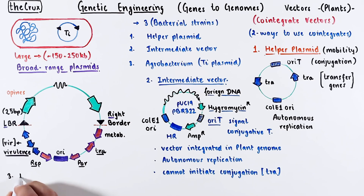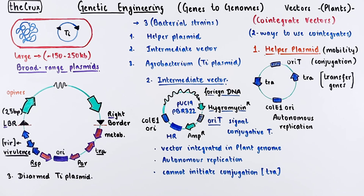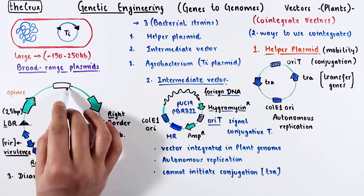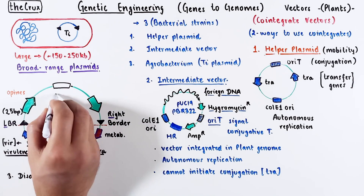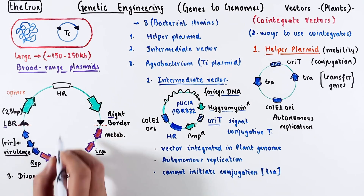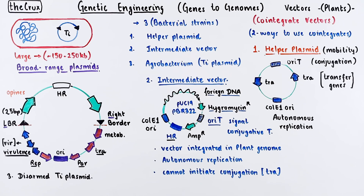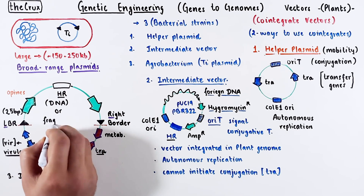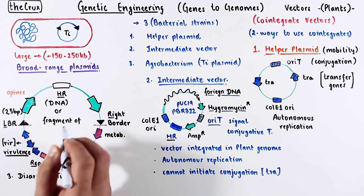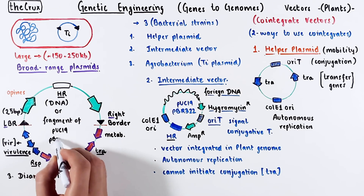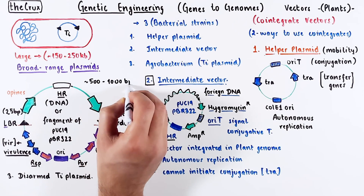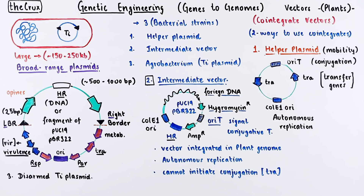The third is the disarmed Ti plasmid, which we discussed earlier. This disarmed Ti plasmid contains a short homology region, which is an identical sequence also present in the intermediate vector. You can also use the DNA from pBR322 or pUC19, which should also be present in the intermediate vector. As long as it is sufficiently long, it will work as a homology region.